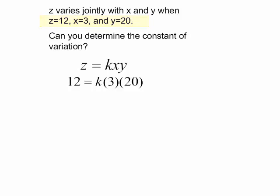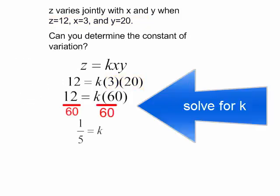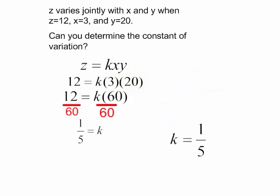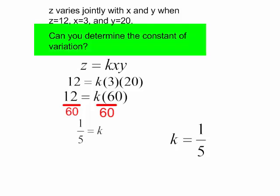Now let's simplify this. 3 times 20 is 60. I will get 1-5th equals k. Our constant of variation is 1-5th.